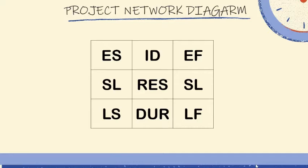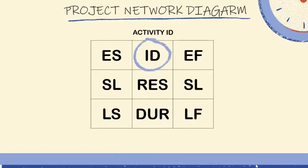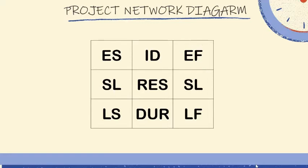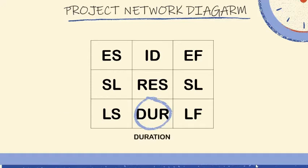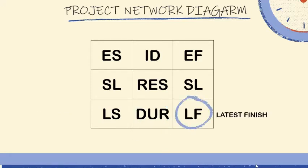Now we proceed to the project network diagram. In order to construct it, we must state all the terms for an activity. ES is earliest start; ID is for activity ID; EF is earliest finish; SL is for slack; RS is for resource; LS is for latest start; DR is for duration; and LF is for latest finish.